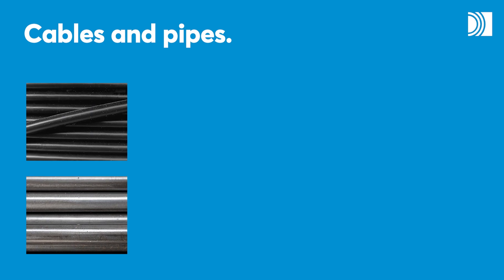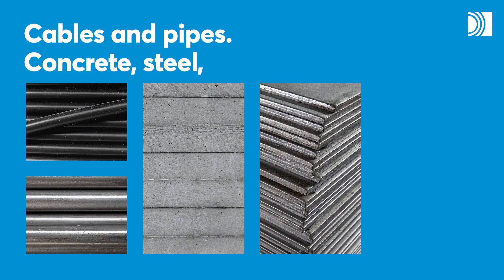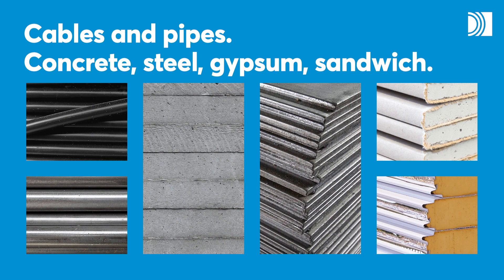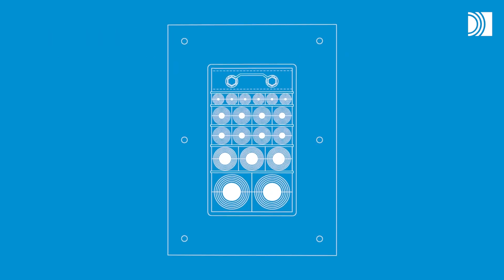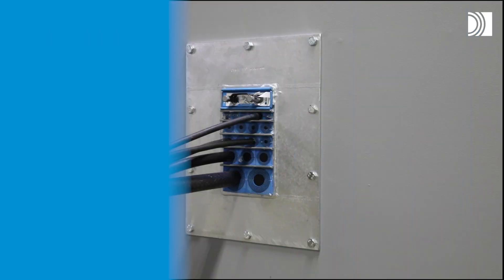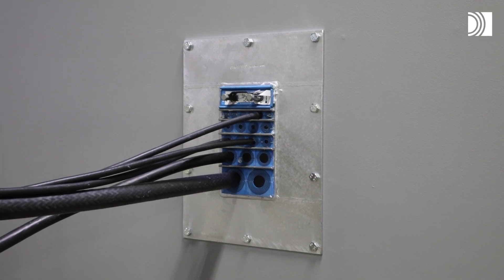You can seal openings for both cables and pipes in different structures such as concrete, steel, gypsum or sandwich walls or floors. The installation procedure is similar for most rectangular seals. This example shows a Roxtec GH transit.